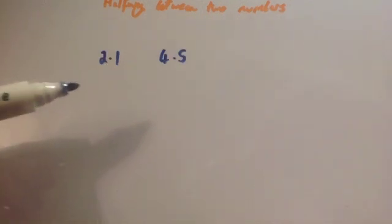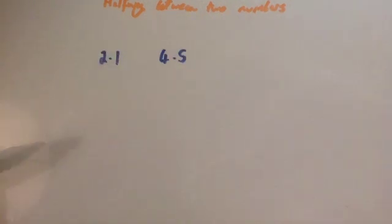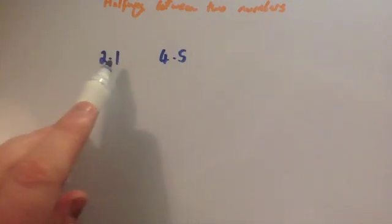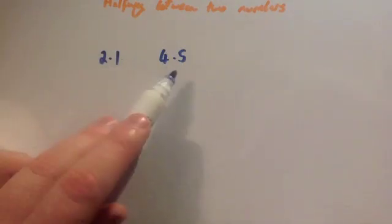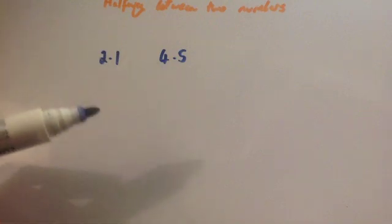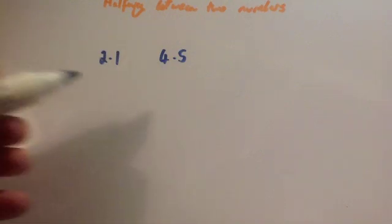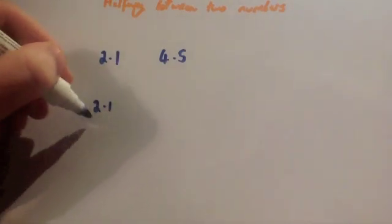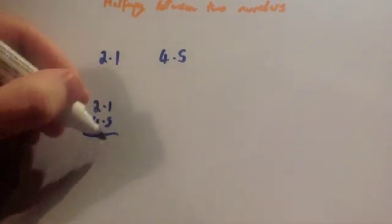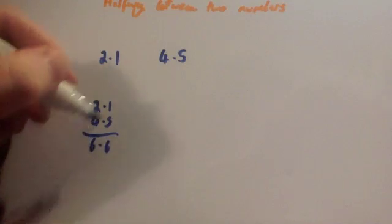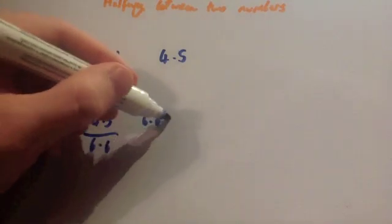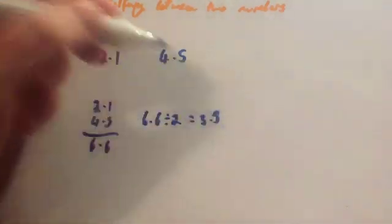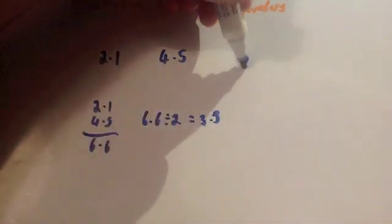Let's find halfway between two point one and four point five. Some people like to subtract them and say that's two point four, and half of two point four is one point two, and add on. I just like to add them and halve it — two point one plus four point five equals six point six, and half of six point six is three point three. So halfway between these two numbers is three point three.